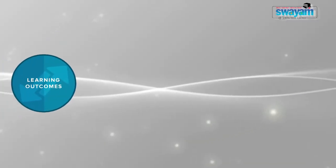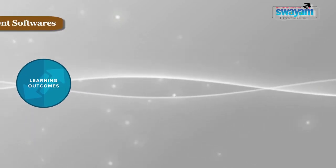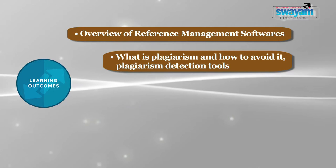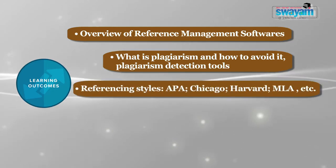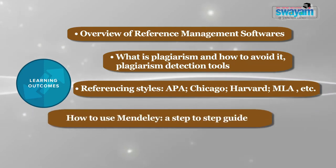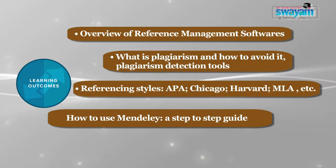Plagiarism is the most serious form of misconduct in scholarly communication. There exists ambiguity about it in the academic community. This lesson aims to address some of the issues related to plagiarism and will also help you develop the skills required to use Mendeley reference management software. The basic objective of this module is to give you an overview of reference management softwares, what is plagiarism and how to avoid it, various plagiarism detection tools, and various referencing styles like APA, Chicago, Harvard, MLA, etc. This module will also give you a step-by-step guide on how to use Mendeley.